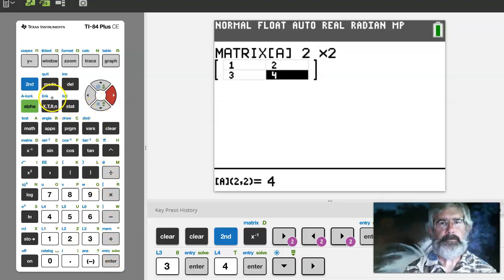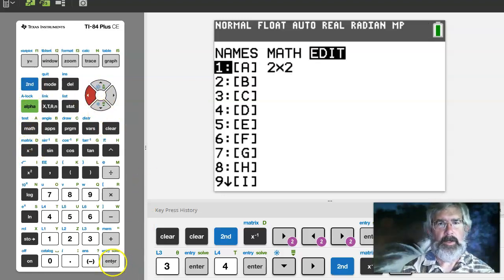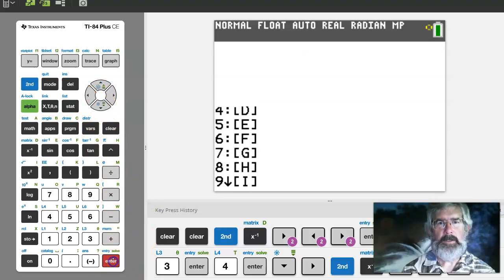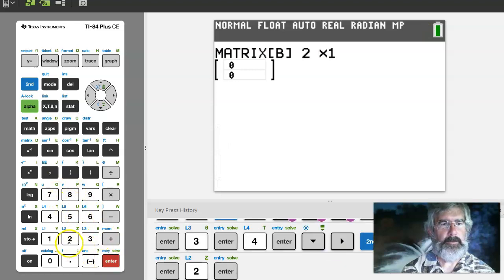So now I've got matrix A as a 2 by 2 matrix. I can actually go and enter another matrix as well. So I'll go back to matrix, go over to edit, go down here to B.